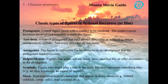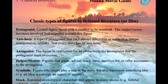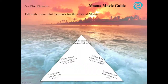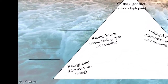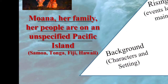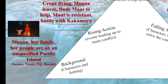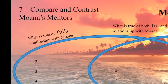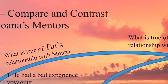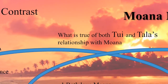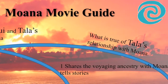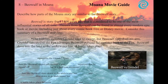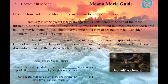Five: a character prototypes lesson, identifying protagonists, antagonists, antiheroes, and other symbols. Six: a plot elements lesson, identifying background, rising action, climax, falling action, and resolution. Seven: an analysis of the varying advice from two mentors — Moana's father and grandmother — using a Venn diagram or double bubble. Eight: a Beowulf lesson, since you could find many of the same elements from that narrative in the story of Moana.